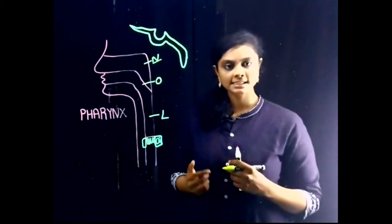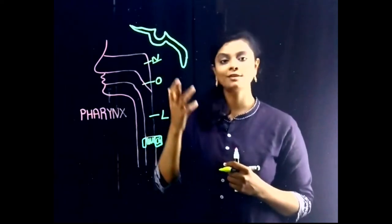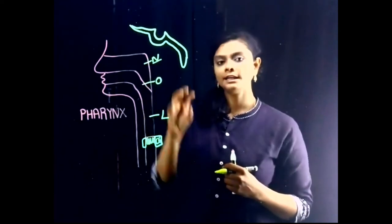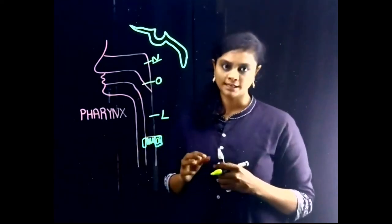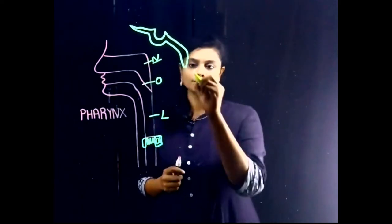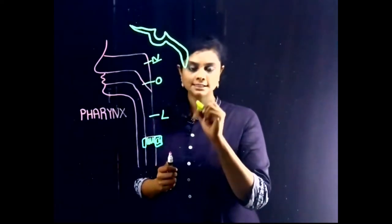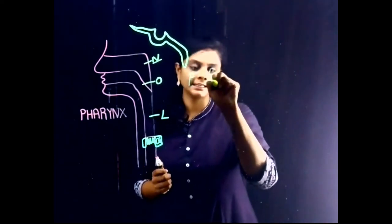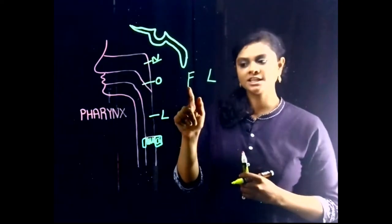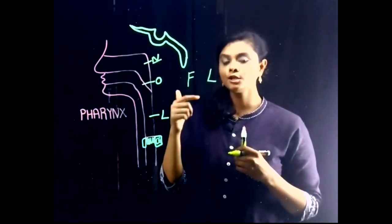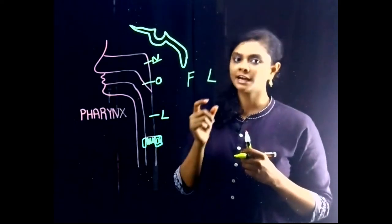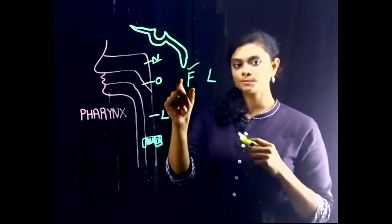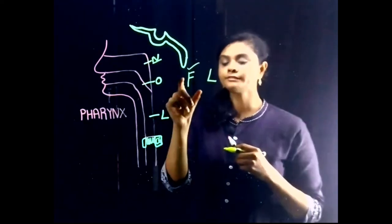The nasopharynx contains ciliated columnar epithelium — it is lined by ciliated columnar epithelium. When it comes to the boundaries of the nasopharynx, the wall of the nasopharynx is formed by one fascia and one ligament. The fascia is the pharyngobasillar fascia, which forms the wall of the nasopharynx.